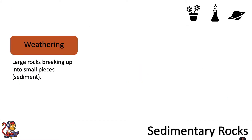First of all we start with a process called weathering, which is large rocks breaking up into small pieces called sediment. There are three main examples of weathering that we're going to look at in more detail.